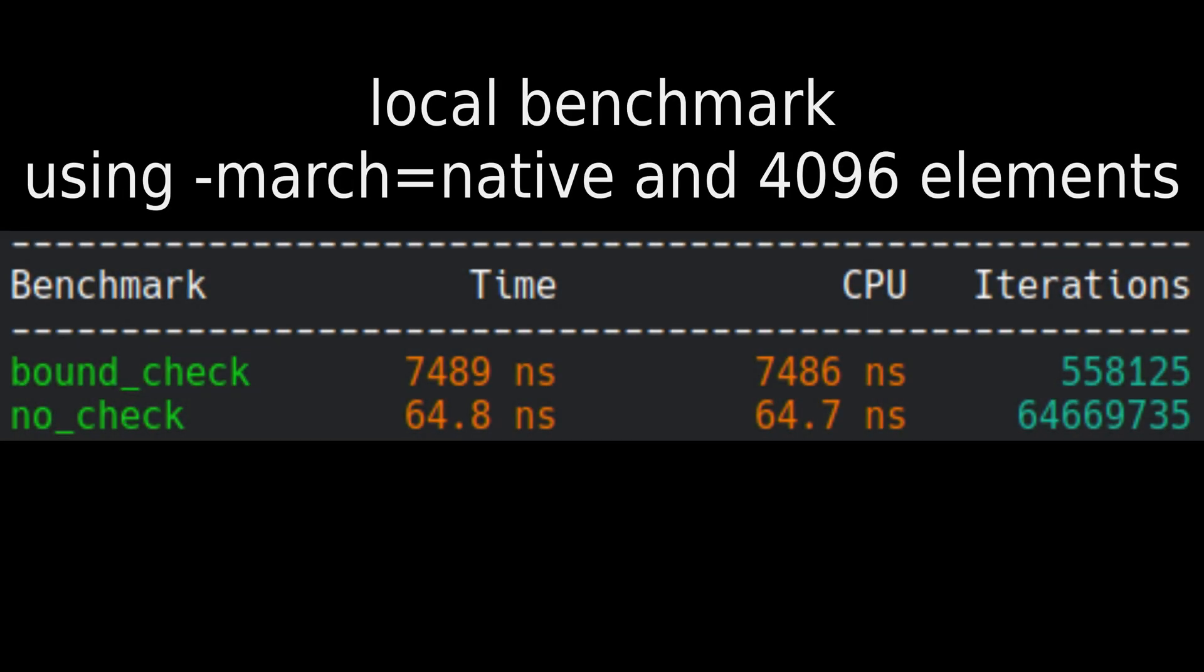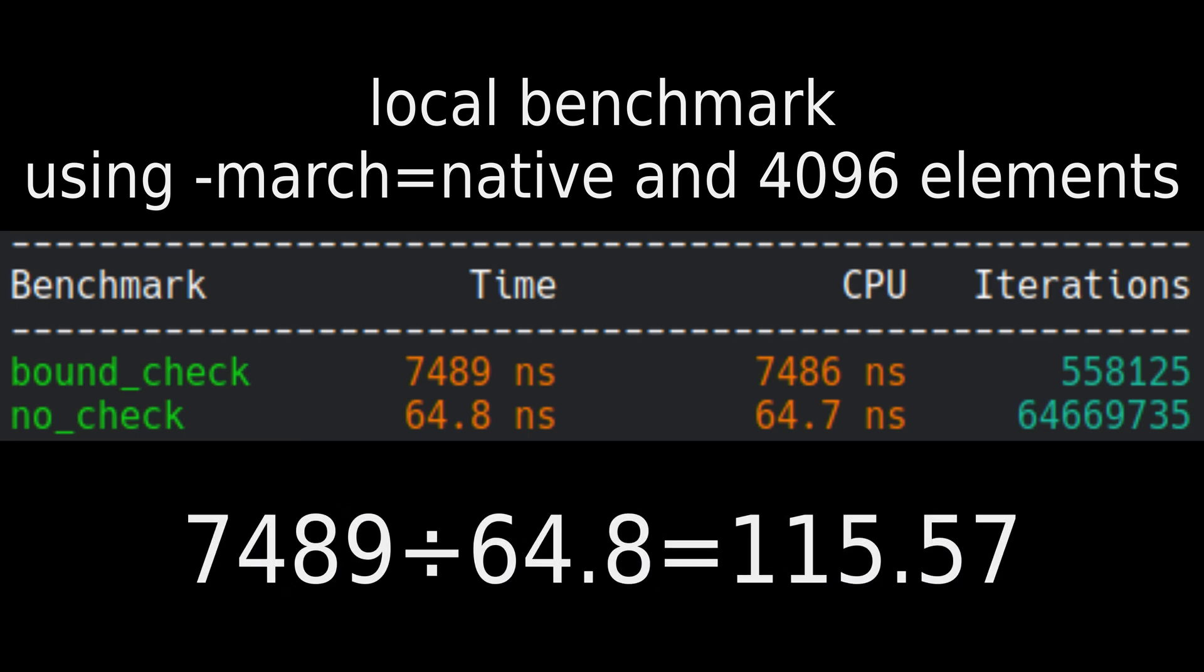Just for fun I tried to maximize the speedup on my machine, using -march=native to use AVX2 instead of SSE, and found a sweet spot of 4096 vector elements. This resulted in a huge 115 times speedup, just from removing a bound check.